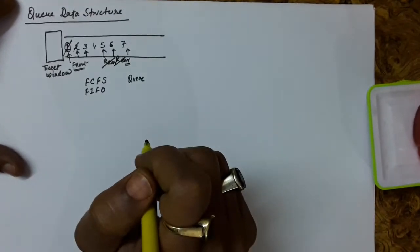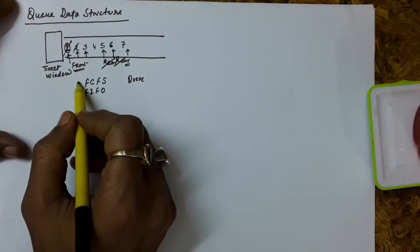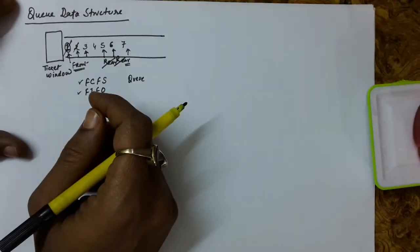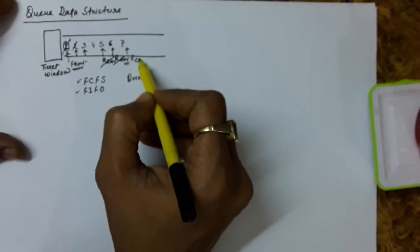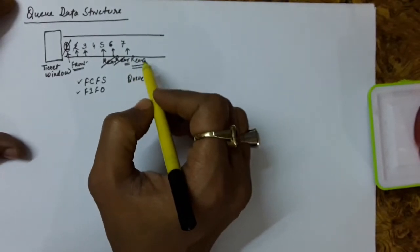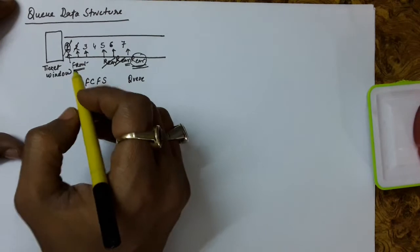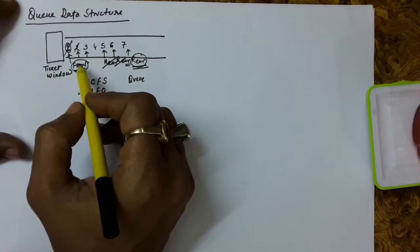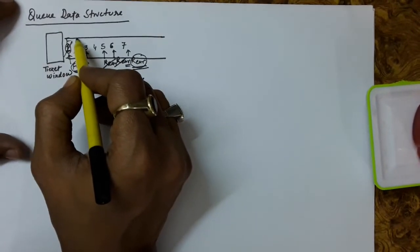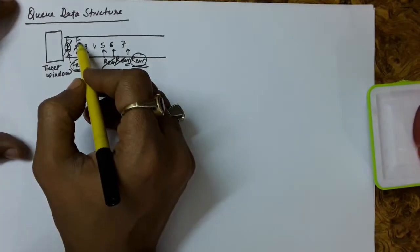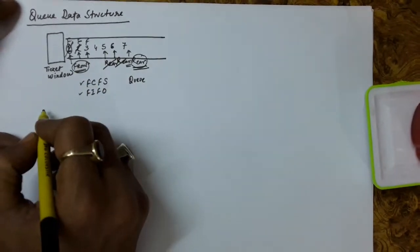So as a definition, a queue is an ordered collection of items — ordered means it follows first-in, first-out order — into which items may be inserted at one end called the rear of the queue, and removed from another end called the front of the queue. After serving one person, the front shifts to the next person, and so on.